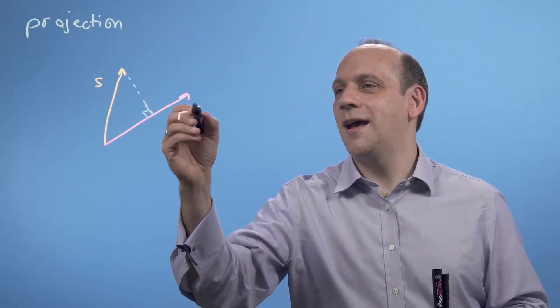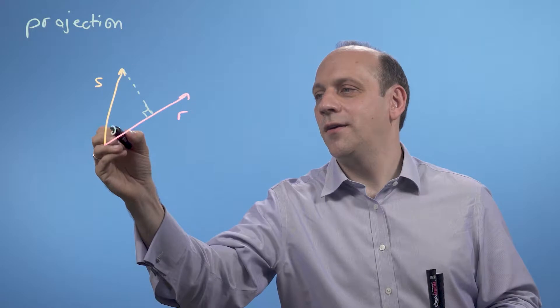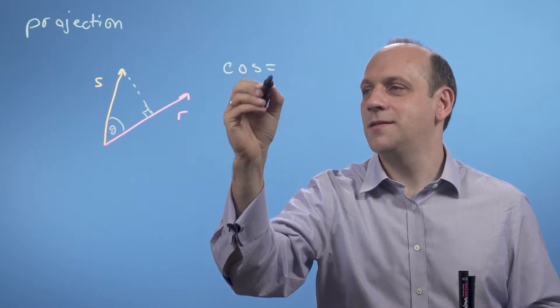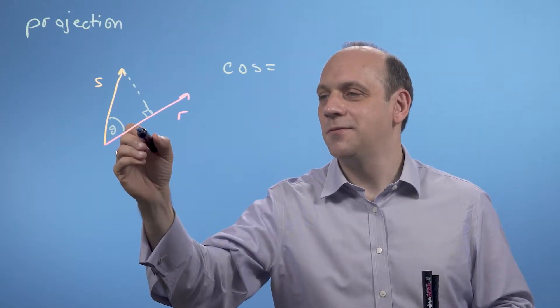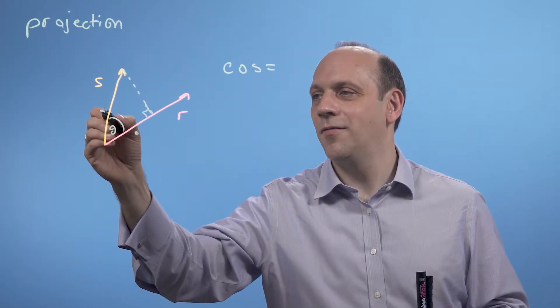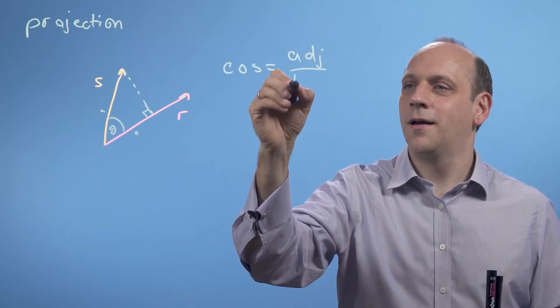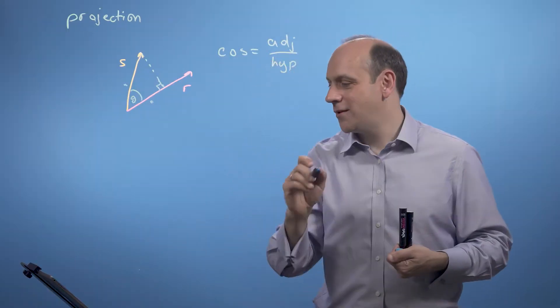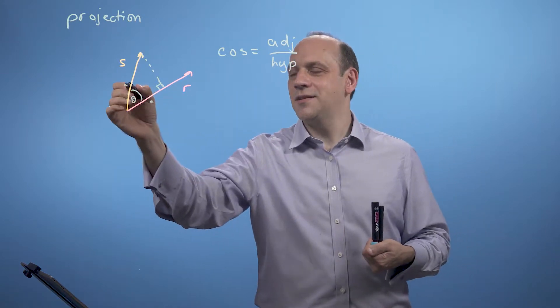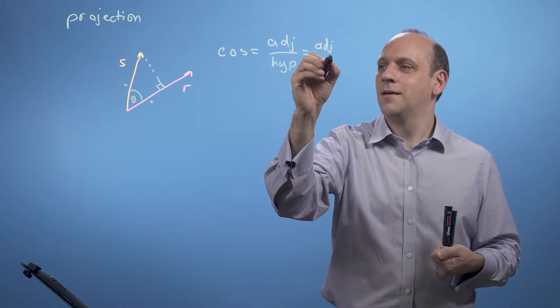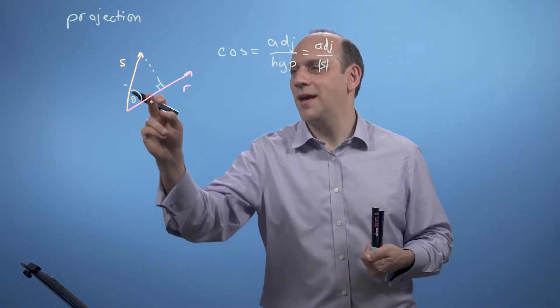If I can say that, if this angle here is theta, that cos theta is equal to, from SOHCAHTOA, it's equal to the adjacent length here over the hypotenuse there. Adjacent over the hypotenuse. That is, and this hypotenuse is the size of s. So that's the adjacent over the size of s there.